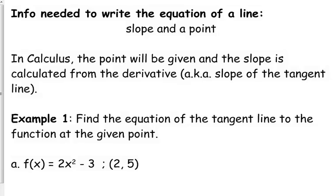Sometimes they will not give you the entire point. Sometimes they will not give you 2 comma 5. They'll just say, find the equation of the tangent line to this function, f of x equals 2x squared minus 3 at x equals 2. Well, all you have to do is plug into the function, get your y out. That's side note number one. A lot of times they actually just give you the x value. They do not give you the entire point, but all you have to do is plug it into the function.